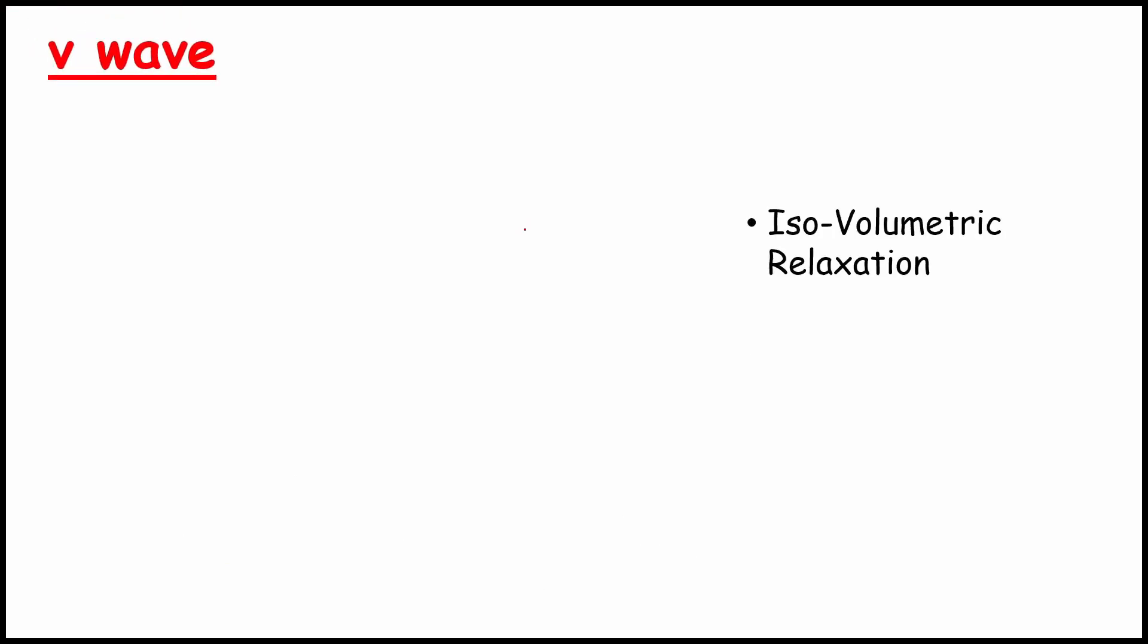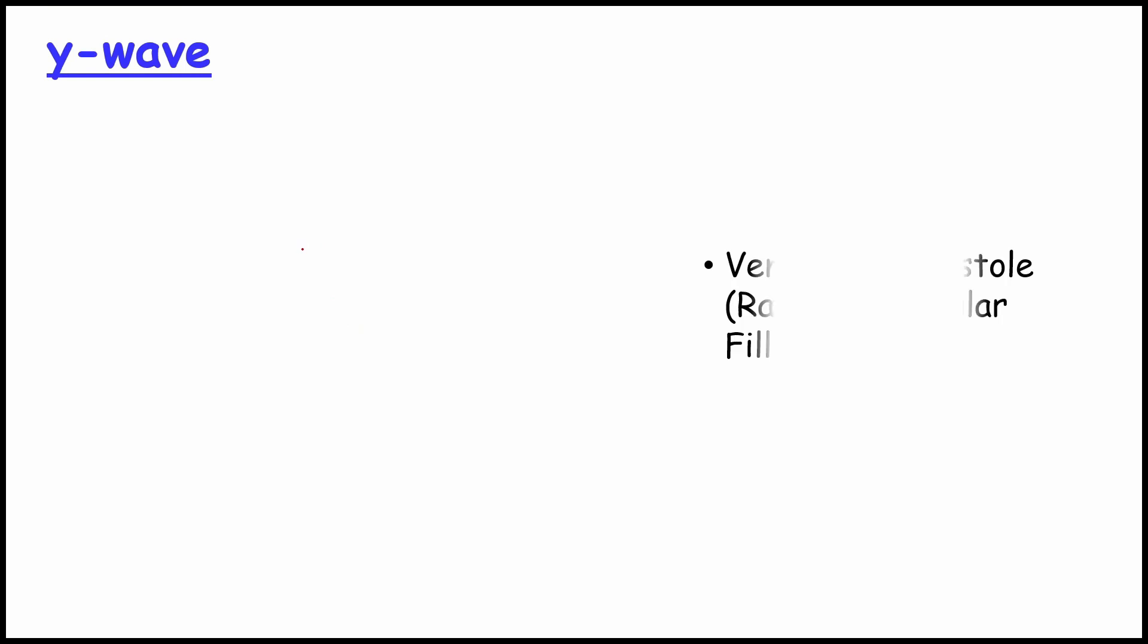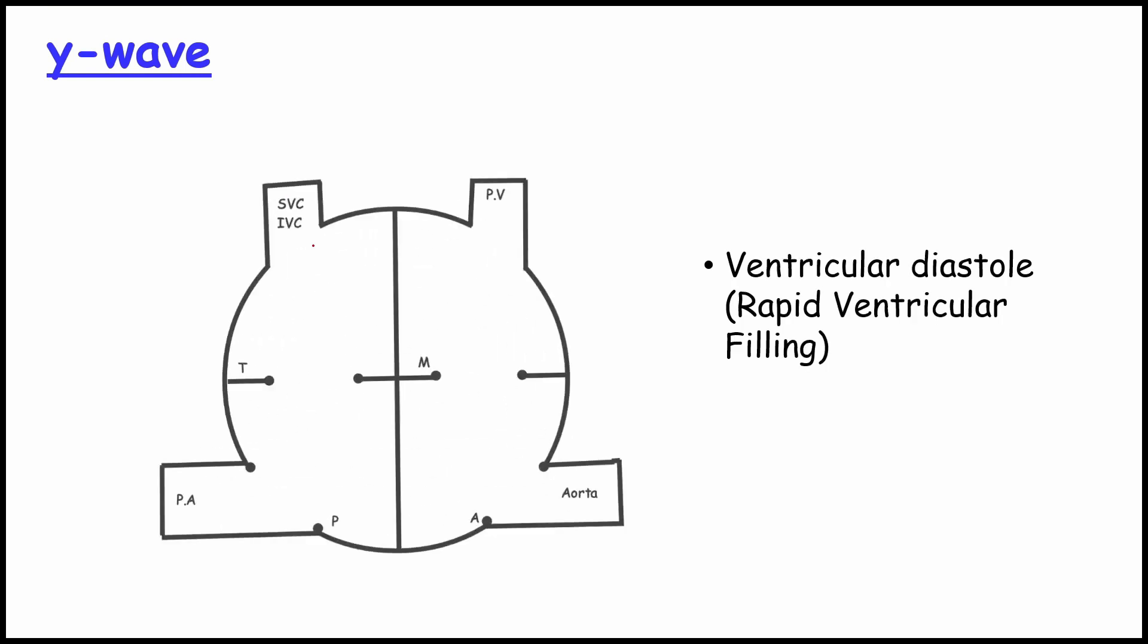V wave. It happens in isovolumetric relaxation. During this, blood which comes in atrium rebound due to the closed tricuspid valve which pushes the blood upward. And the last comes our Y wave. It happens during rapid ventricular filling. Blood from the superior vena cava and inferior vena cava directly flow into ventricle which will push the blood downwards. This causes the Y wave.